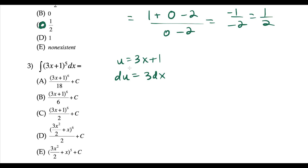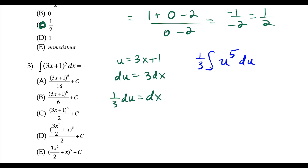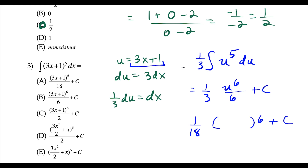We define u equals 3x plus 1, calculate du: the derivative of 3x plus 1 is 3, and tack on dx. We solve for dx, which gives us 1/3 du. Now we substitute: instead of (3x+1) to the fifth, that's u to the fifth, and dx equals 1/3 du. We take the antiderivative: 1/3 times u to the 6 over 6 plus c. So we have 1/18 u to the sixth power plus c. But u equals 3x plus 1, so we match that — choice A.